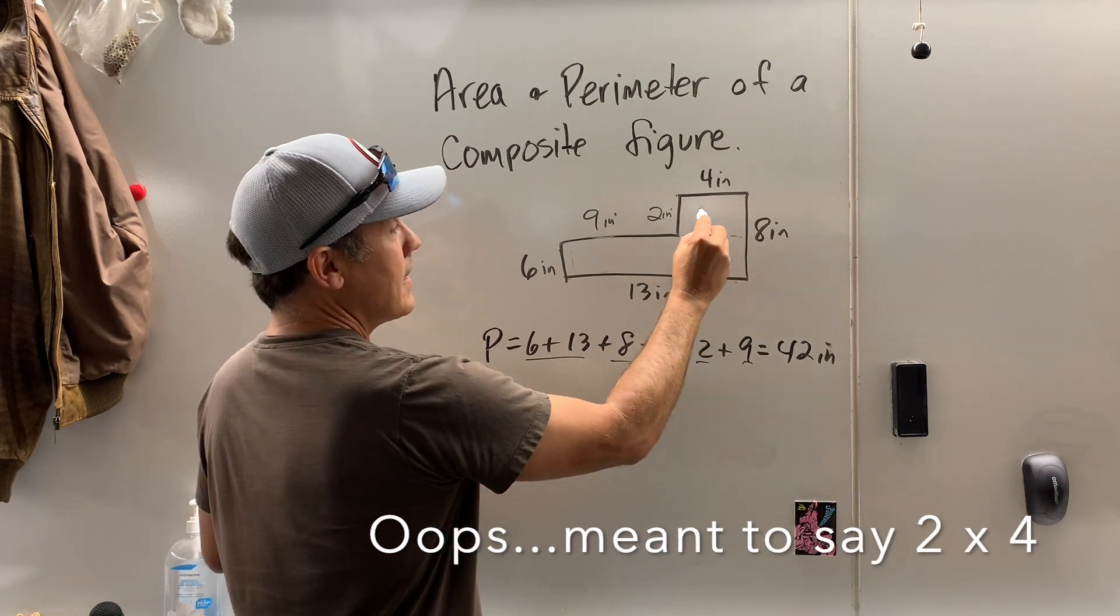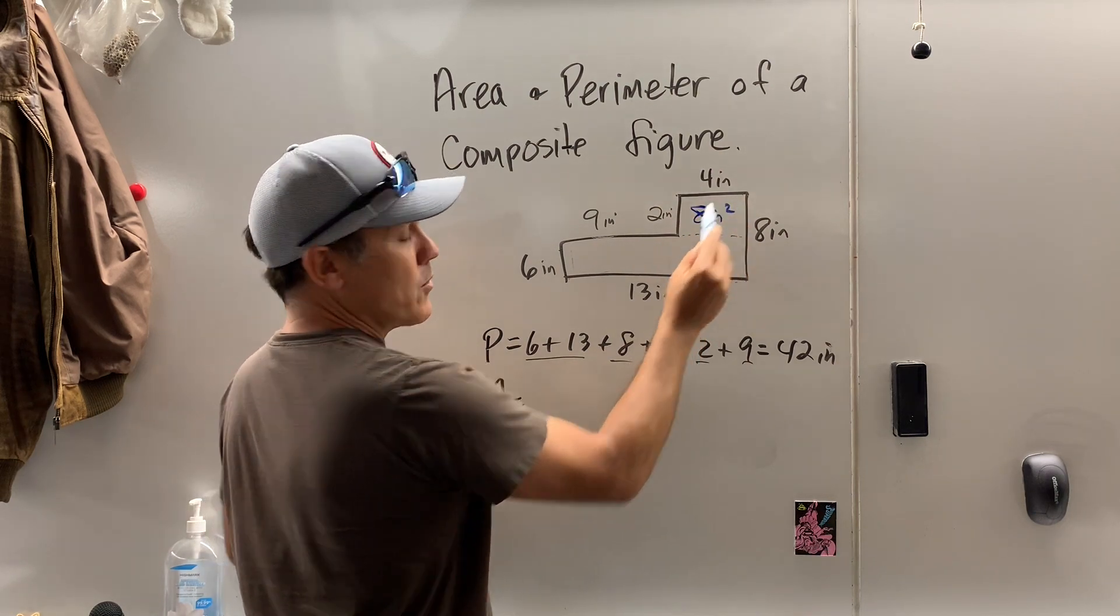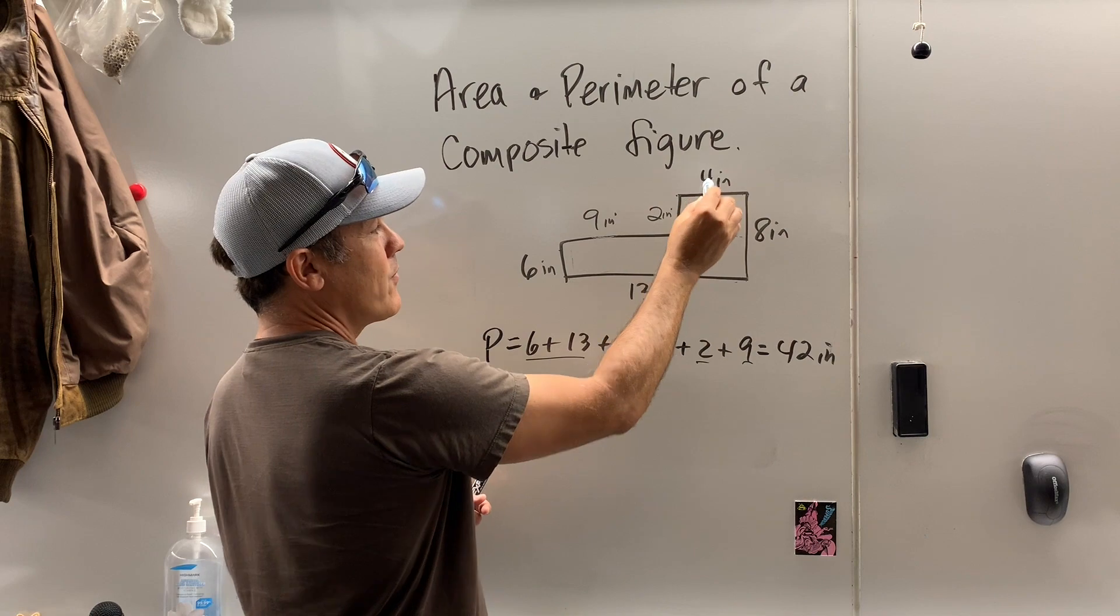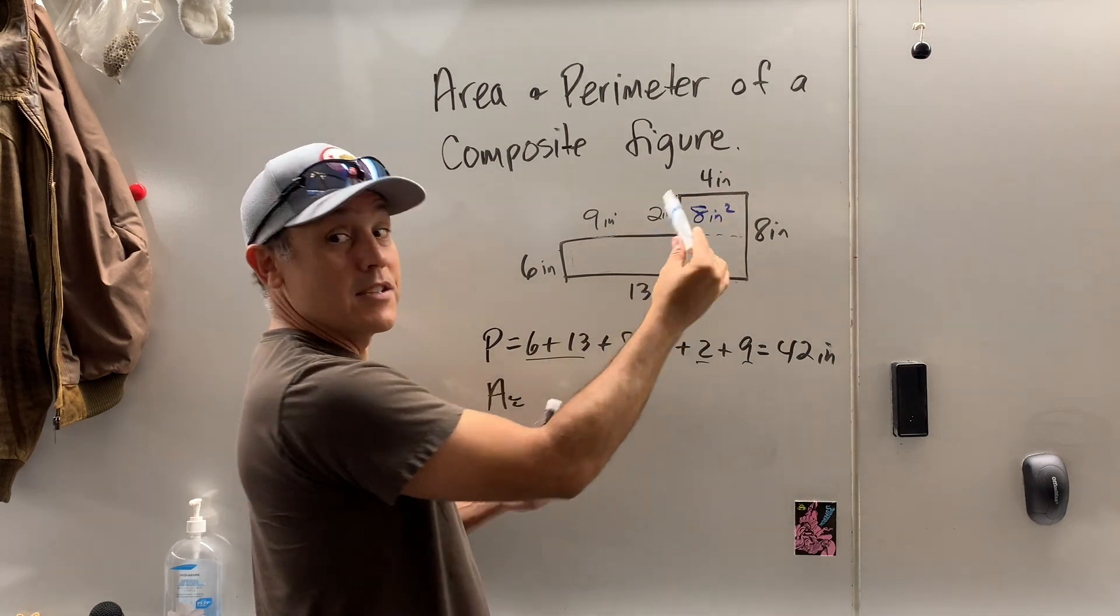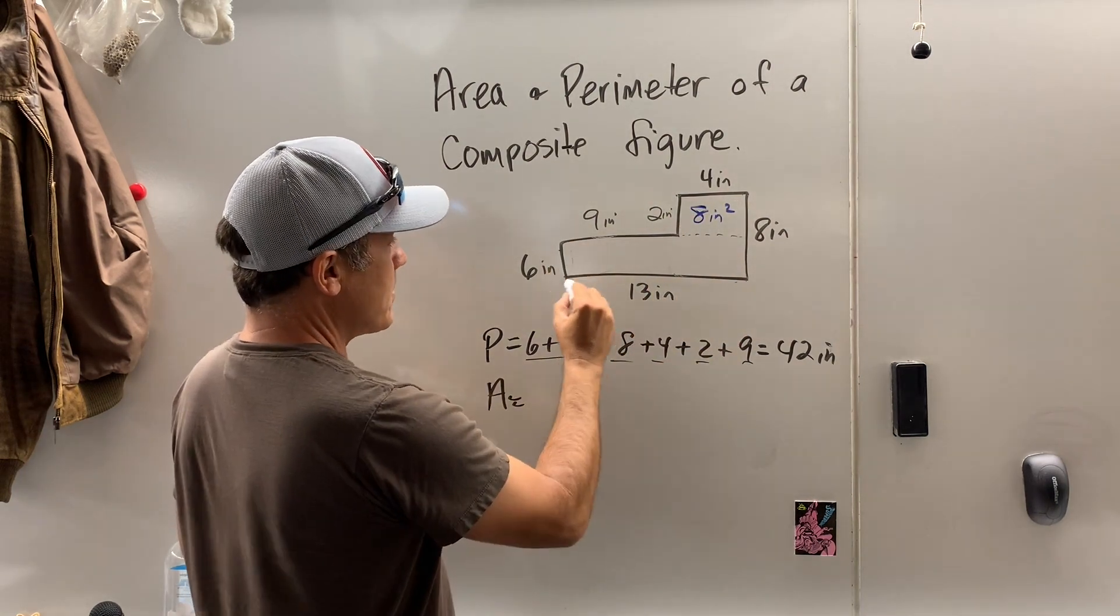But let's find this little nugget right here. It's 2 by 8, and that is 8 inches squared. Why is it squared? Because 2 times 4 is 8, and inches times inches is inches squared.